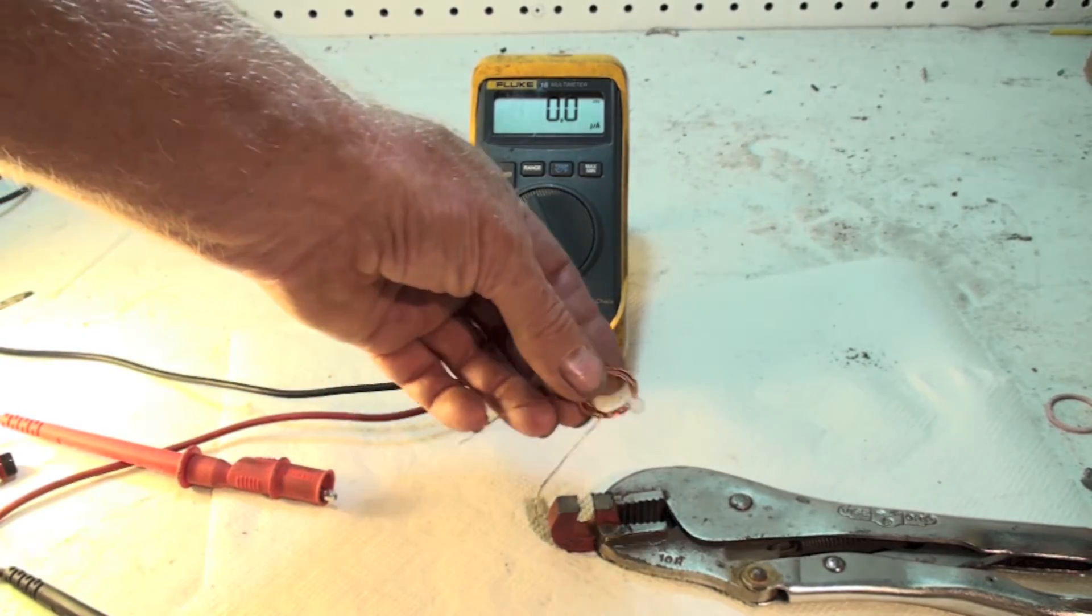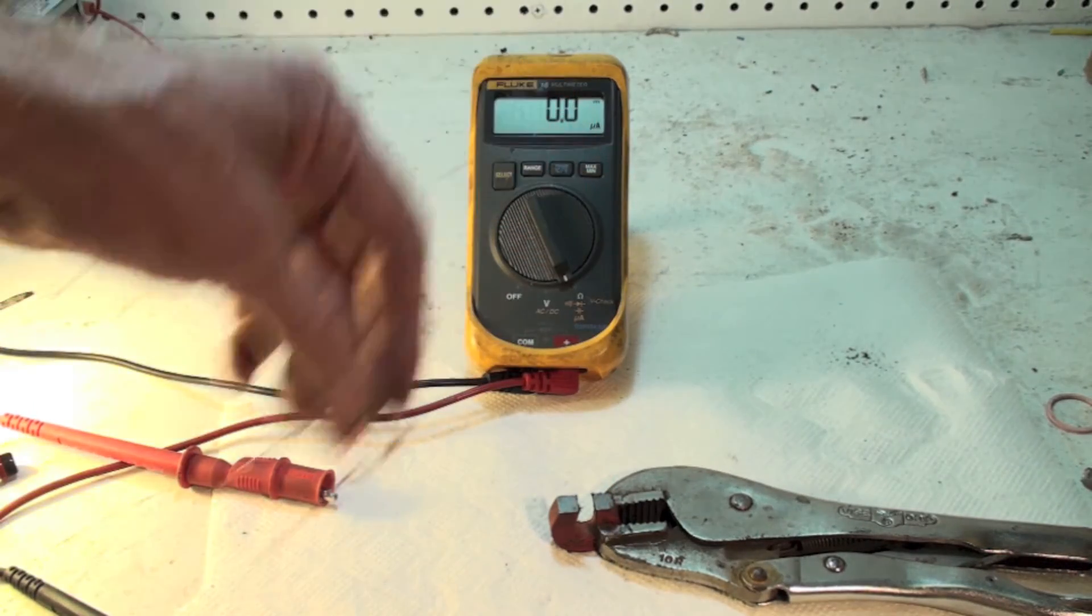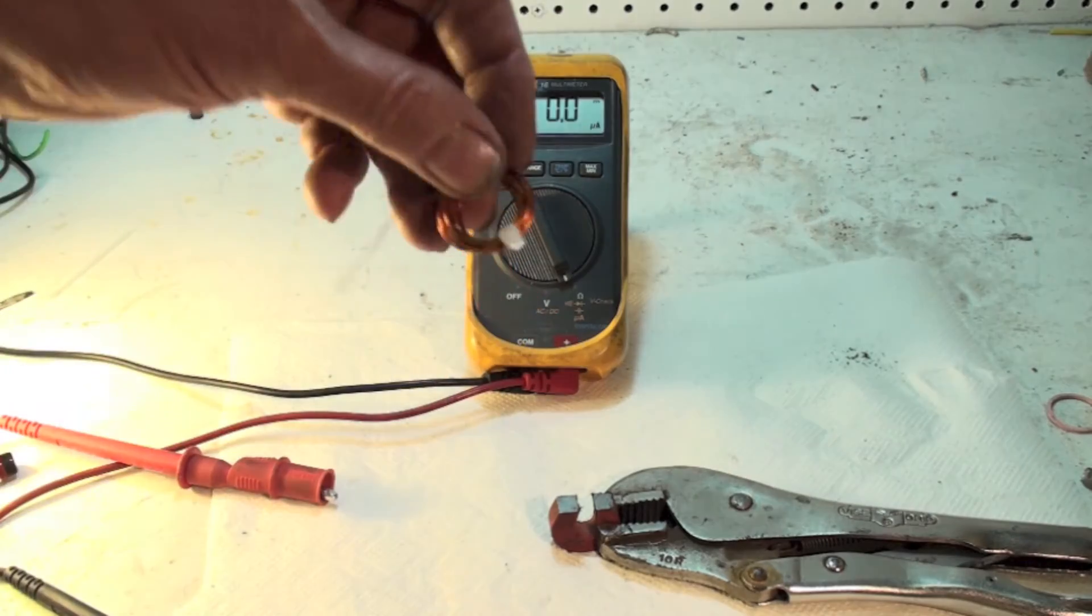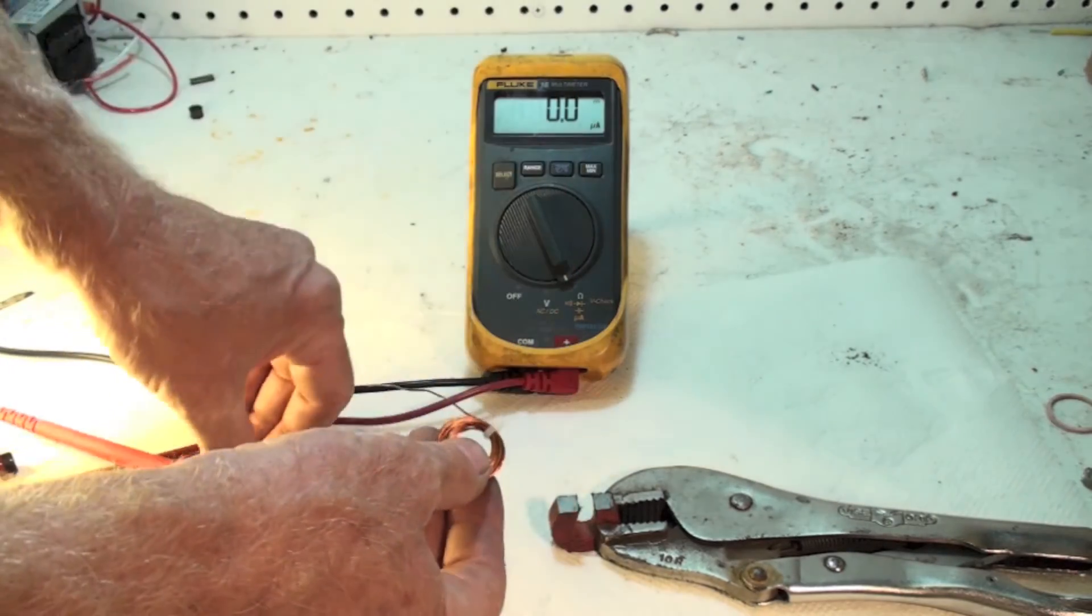Now, if I ran a single wire across there, it would do the same thing. This is about five or six windings. Here's one that's got like 20 windings. Let's try this one.